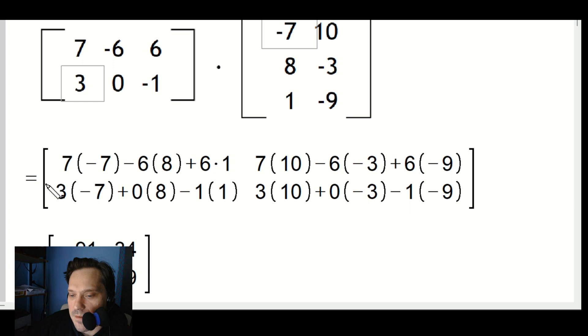Now we're going to do 3 and multiply by the -7, that's going to put you here. Then you do 0 and multiply by 8, that's going to put you here, 0 times 8. Then take the -1 and multiply by the 1, that's -1 times 1.